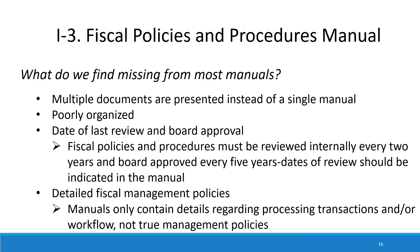The next area of review is your agency's fiscal policies and procedures manual. Common issues we find are that the policies are not centralized in one document — for example, some are in the personnel manual, some in a separate procurement manual, others in governing board procedures. Additionally, we find that manuals are poorly organized, have not been reviewed according to CSBG standards — which is every two years internally, with board approval required for any changes, and board review every five years. The manual also often lacks fiscal management policies and only contains detailed processing descriptions.